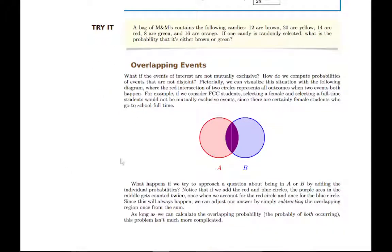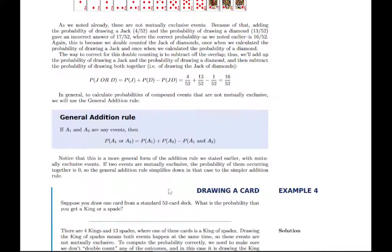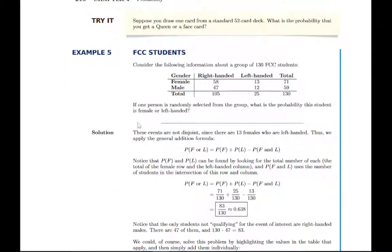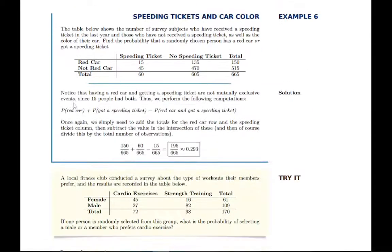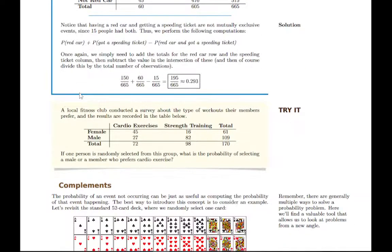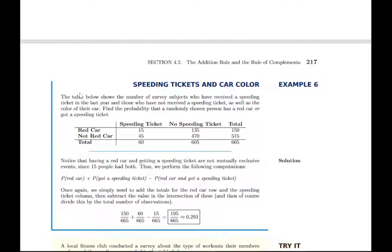For overlapping events, we need to subtract the overlap to get rid of that double counting. The general addition rule is: if you want the probability of one thing or another thing happening, you add their individual probabilities and then subtract the probability that both of them happened. When you just add their probabilities, you count the overlap twice, so if you subtract the overlap once, you get the correct result. Once you get the principle for the addition rule, all of these examples fall into place.